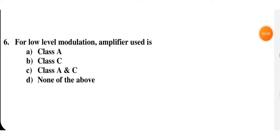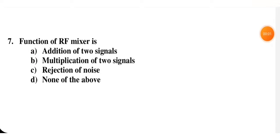For low-level modulation, the amplifier used is class A, class C, class A and C, or none of the above. The answer is class A amplifier. Low-level modulation means modulation that happens before amplification. After amplification, if modulation occurs, that is called high-level modulation.